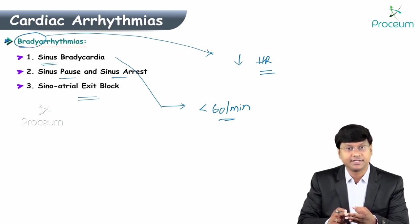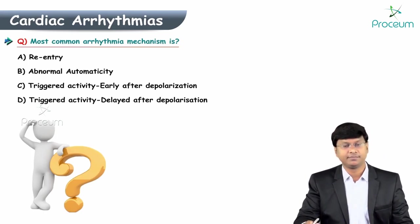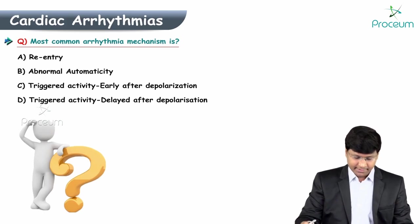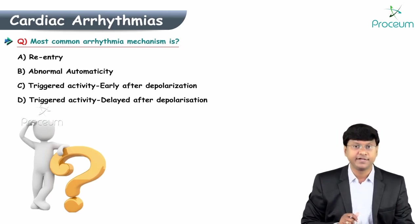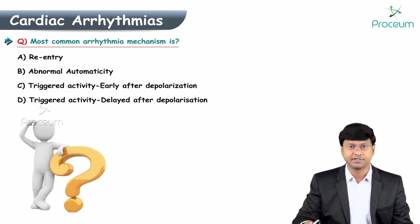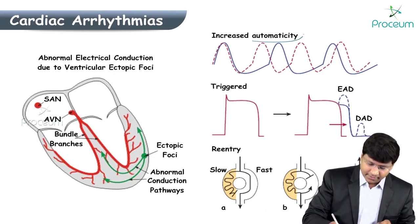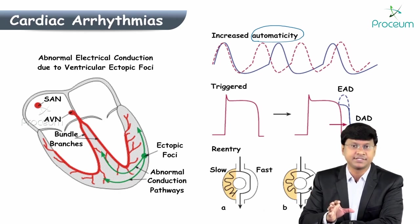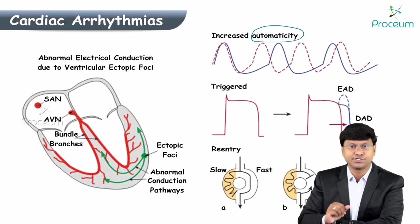Now the mechanisms of arrhythmias. The question can be asked: what is the most common mechanism for the development of arrhythmias — re-entry phenomenon, abnormal automaticity, triggered activity, early after-depolarization, or delayed after-depolarization? There are mainly three mechanisms. The first is increased automaticity. SA nodal cells have a property called automaticity, meaning they do not require any external stimulus; the cells themselves trigger an activity to stimulate the entire heart.